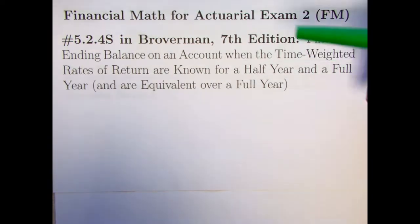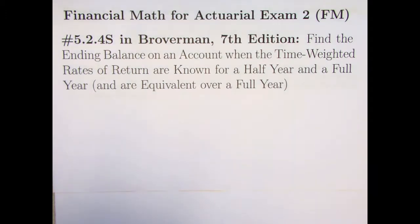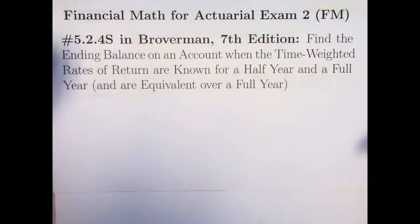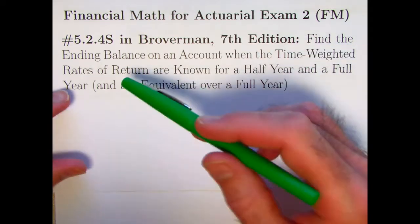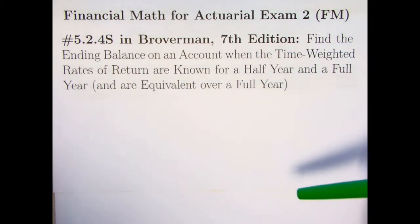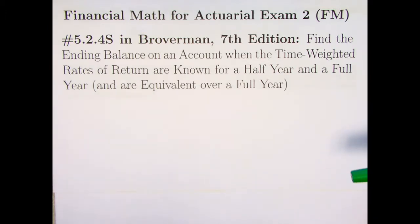In this video, we're going to be doing another fairly short old actuarial exam 2 problem about time-weighted rates of return — exercise 5.2.4s in Burberman. We'll be finding the ending balance on an account when the time-weighted rates of return are known for a half year and for a full year and are actually equivalent over that full year.